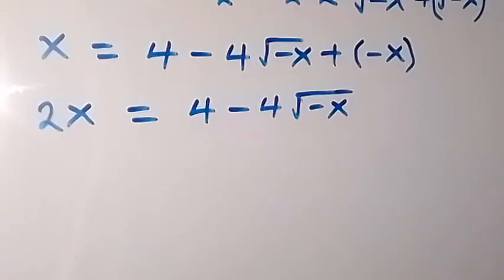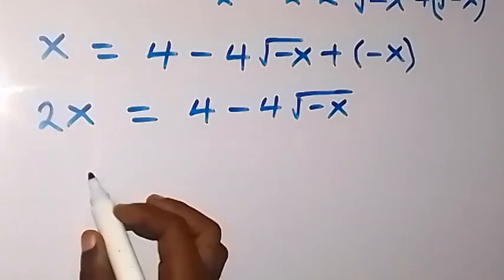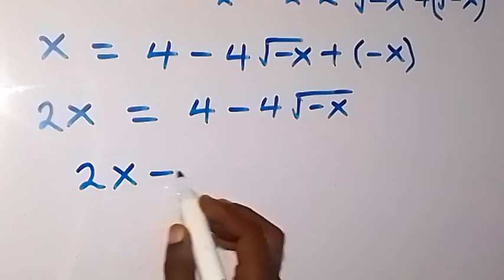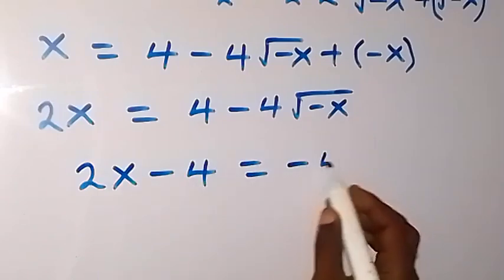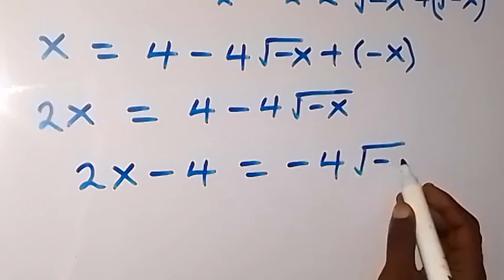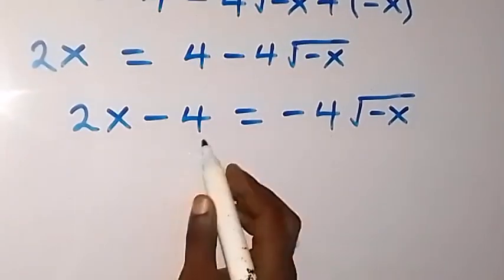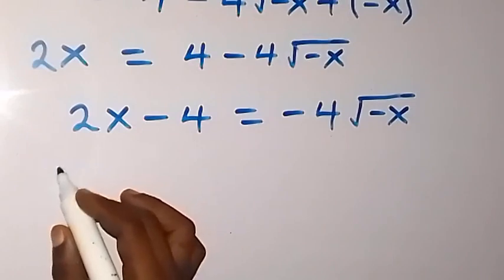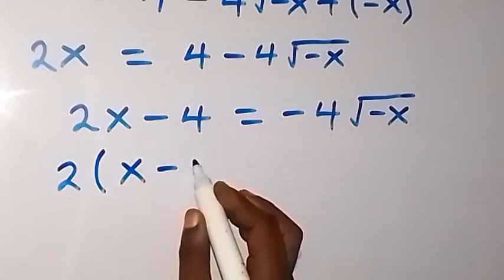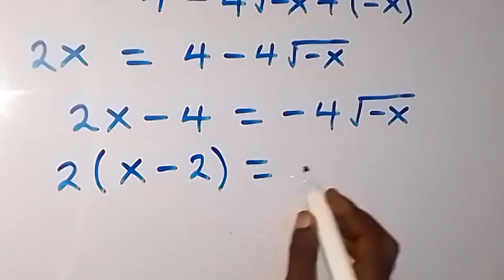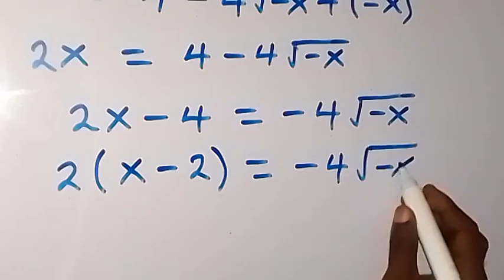From here, let's take 4 on the right side to the left side. So we have 2x minus 4 equals minus 4 root of minus x. On the left side, we have 2 common, so let's take it out: 2 times (x minus 2) equals minus 4 root of minus x.